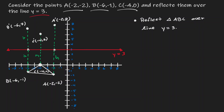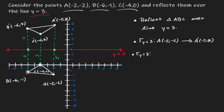Now let's define our new triangle. We have reflected triangle ABC over the line y equals 3. Point A was at (negative 2, negative 2), and after the reflection it landed at (negative 2, 8). For point B, which was at (negative 6, negative 1), the image landed at (negative 6, 7). Let's express these reflections using the correct notation.